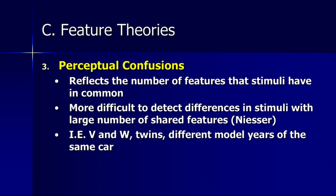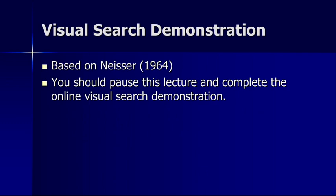When we talk about perceptual confusions, we're talking about things like letters that are very similar, identical twins that aren't always completely identical but are very close, or different model years of the same car — can we tell those apart? These can be very perceptually confusing. There's a visual search demonstration available online for my students, and I'll also post a version of that to YouTube. If you want, you can pause here and come back after you've done that visual search demonstration.